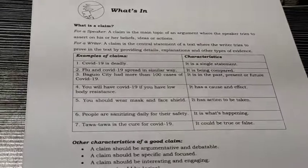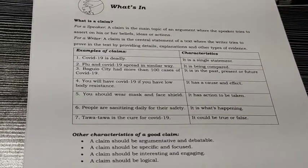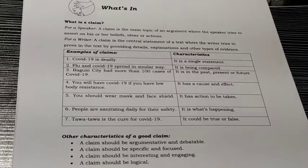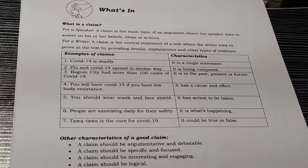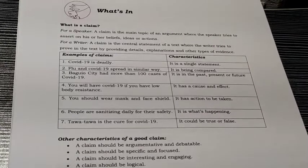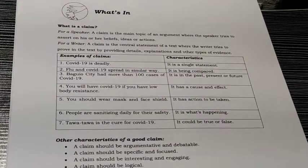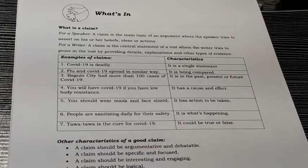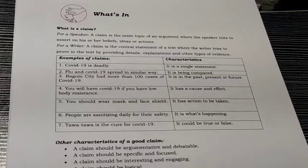We will proceed to 'What's In.' What is a claim? For a speaker, a claim is the main topic of an argument where the speaker tries to assert his or her beliefs, ideas, or actions. For a writer, a claim is the central statement of a text, where the writer tries to prove it by providing details, explanations, and other types of evidence.